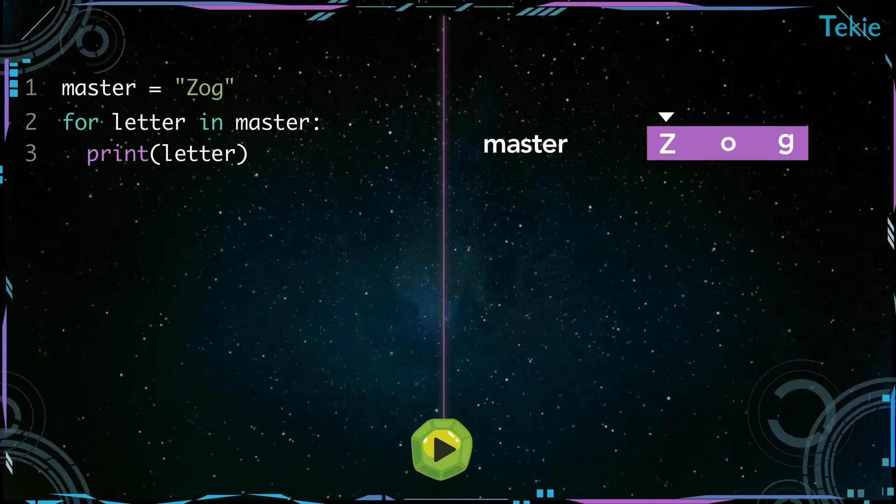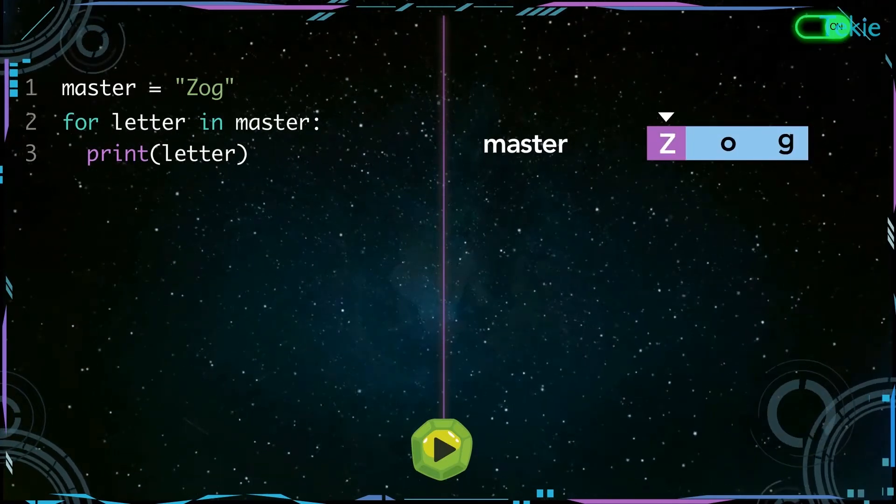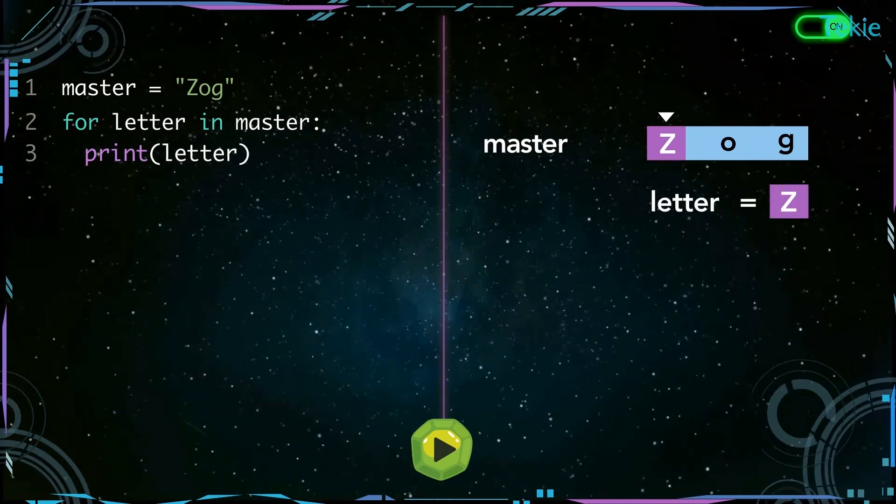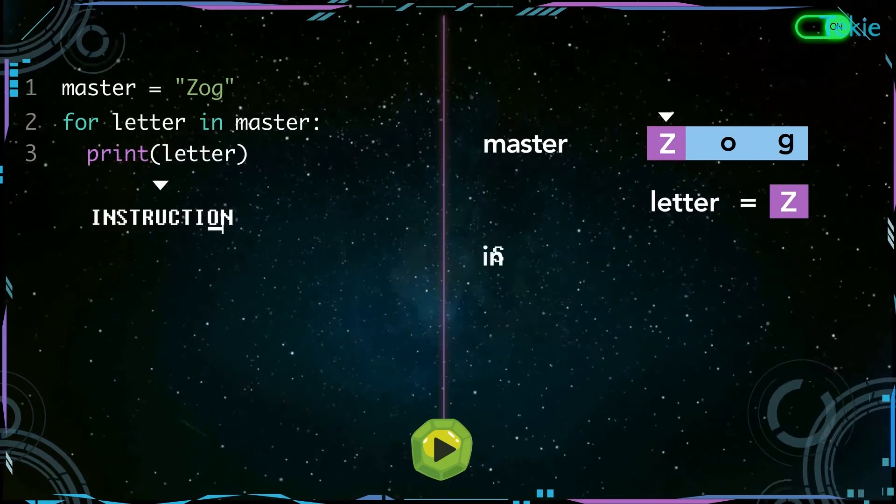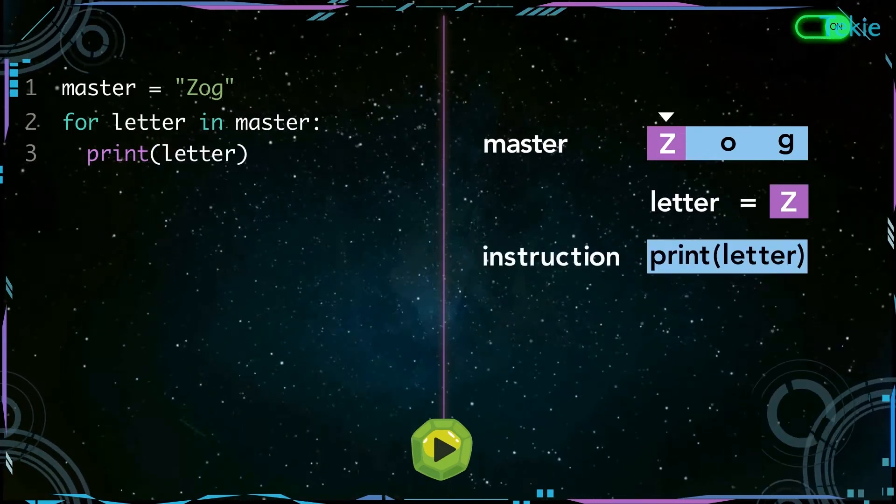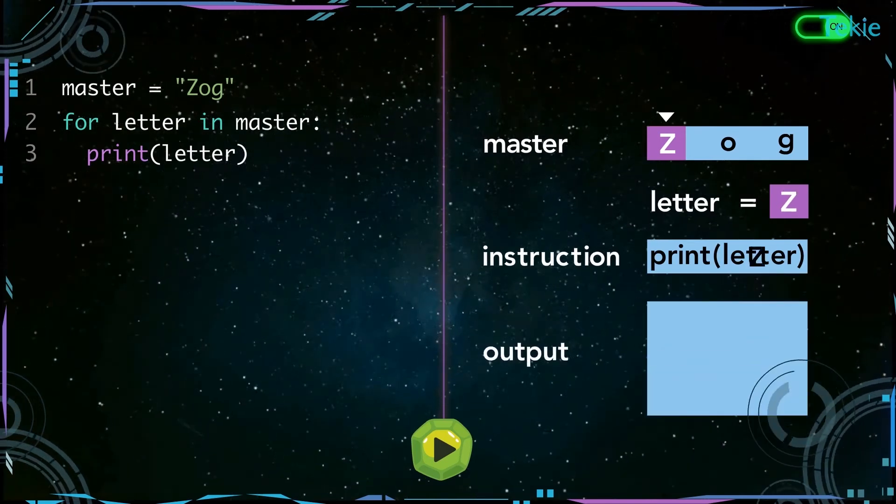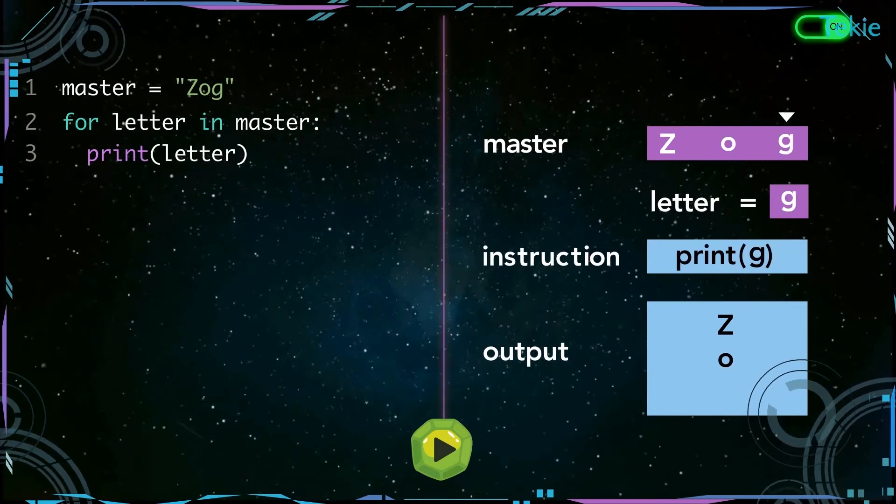The loop starts with the first letter Z and stores it in the variable letter. And then Mr. Python repeats the instructions of the loop, which says to print the variable letter. Since the variable letter holds Z, Mr. Python displays Z, and the loop continues till we display letter G in sequence.